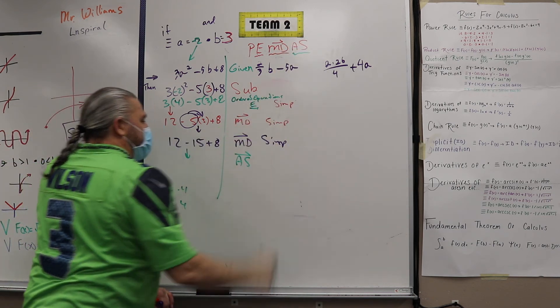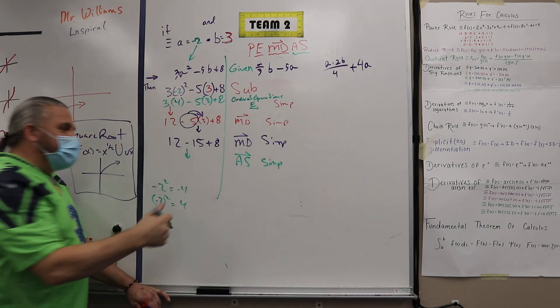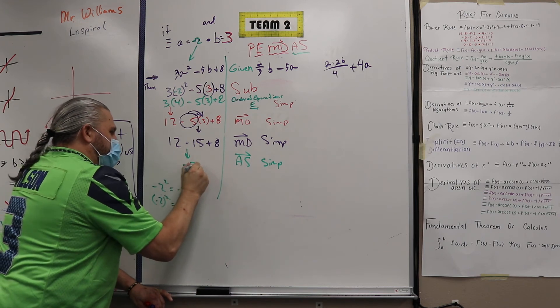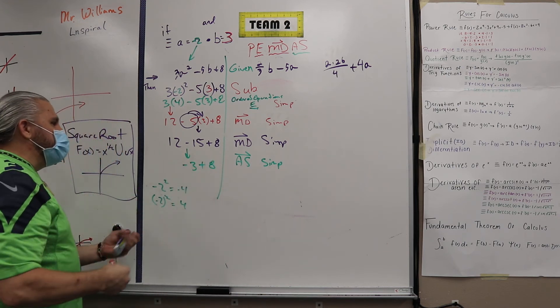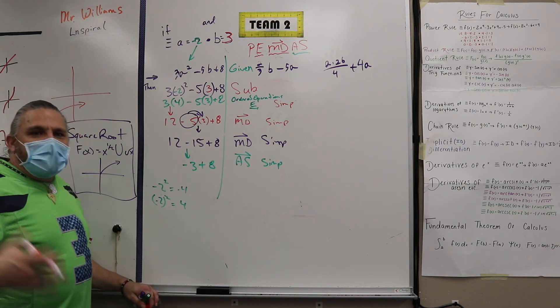From left to right. And in here we just call it simplifying. So what is 12 minus 15? Negative 3. Negative 3 plus 8. Notice how I'm changing the colors so that you can see the next step.